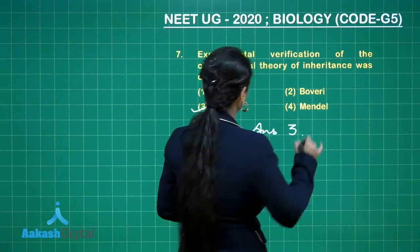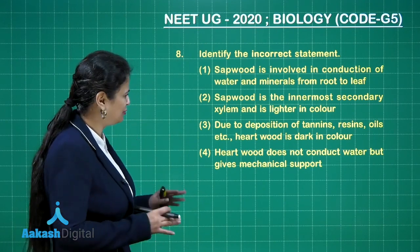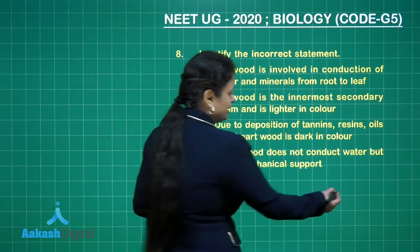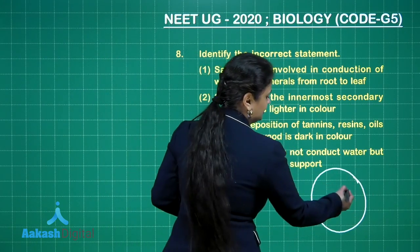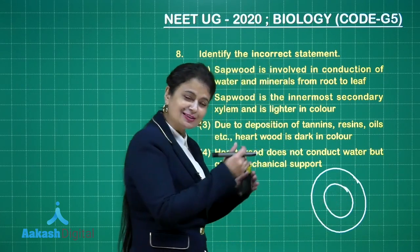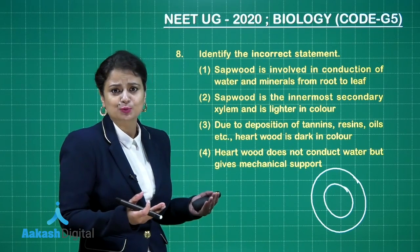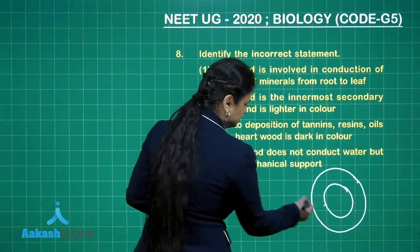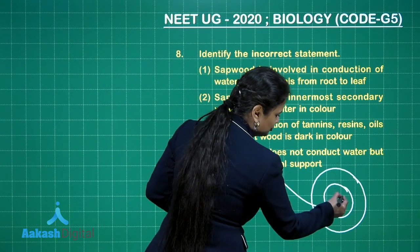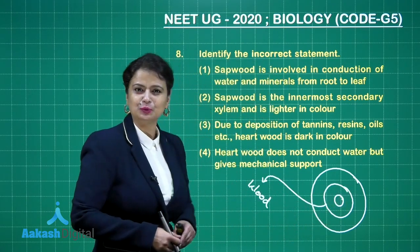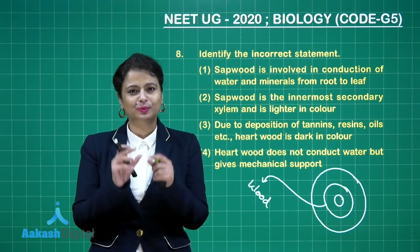Next question: identify the incorrect statement. This is with respect to anatomy — a very beautiful question from secondary growth. Let's say this is a transverse section of a dicot stem and this is the vascular cambium. Vascular cambium on the inner side forms secondary xylem, and another name for secondary xylem is wood. The major part present here is secondary xylem or wood. The wood present in the centermost part is non-functional.